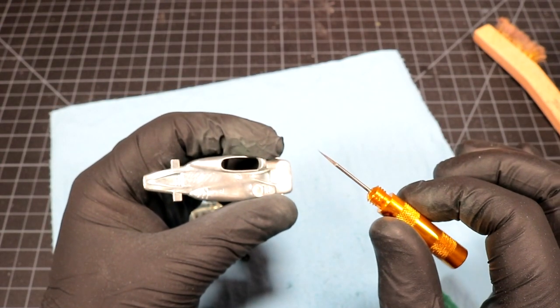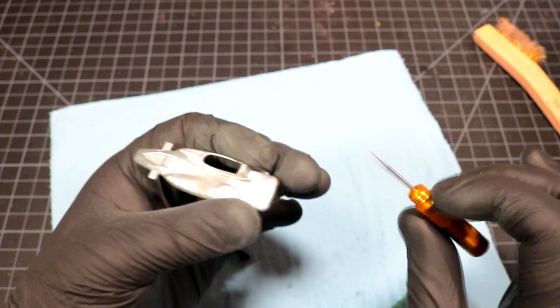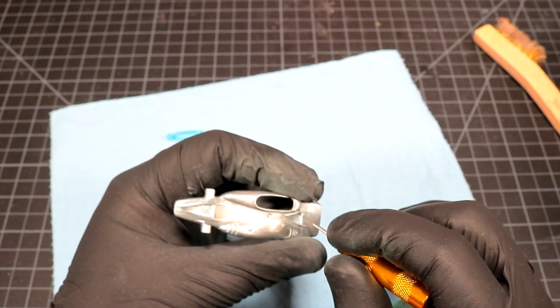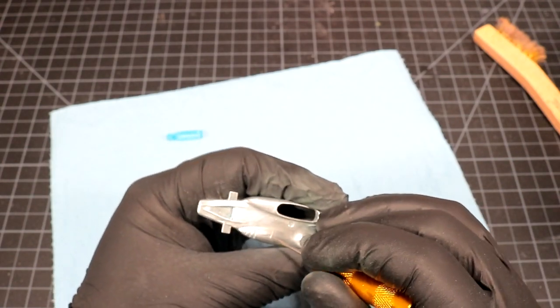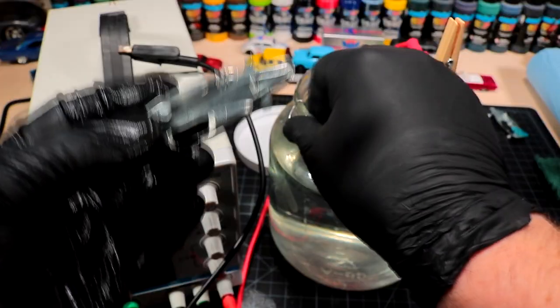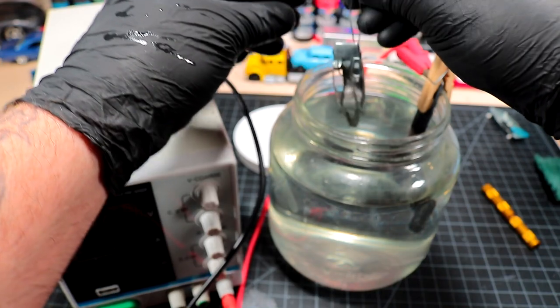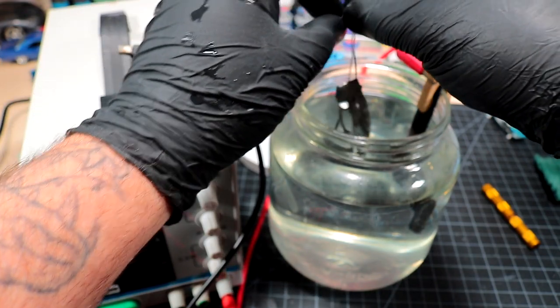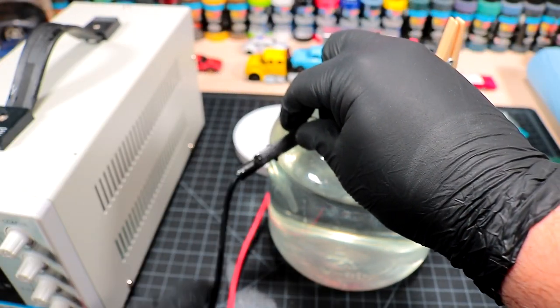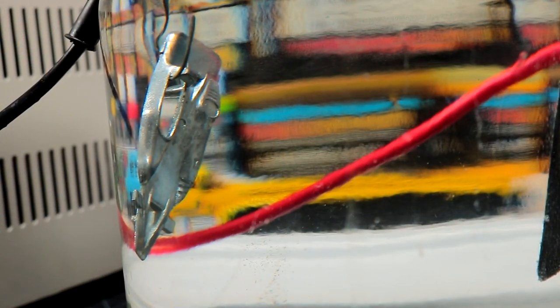This little thing's a reamer for cleaning out airbrush tips. I got a bunch of these and they work really good for getting into the little nooks and crannies. There's a little body, just gonna hang it on my little stainless wire here, everything's in the way.